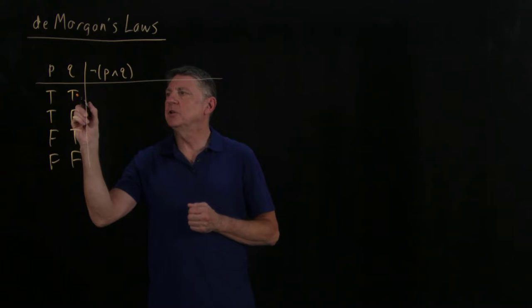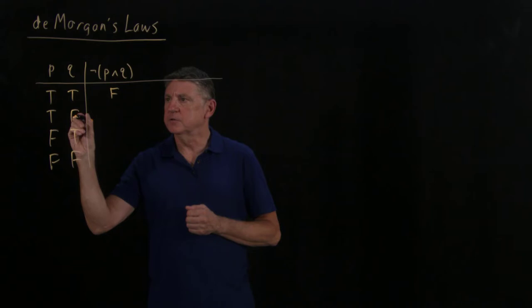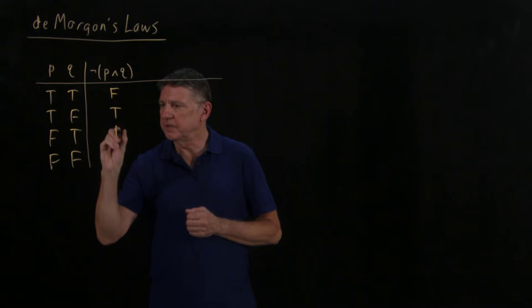The truth table for this is: p and q are true here, and that means their negation — not (p and q) — is false. When p and q are both false, the negation is true. When p is true and q is false, p and q is false, so the negation is true.